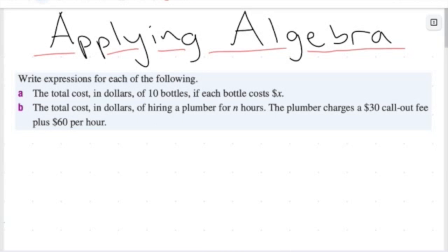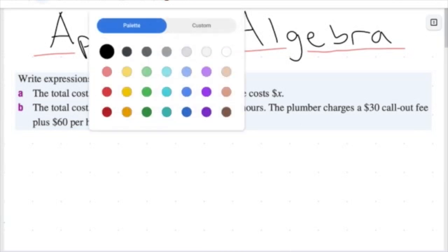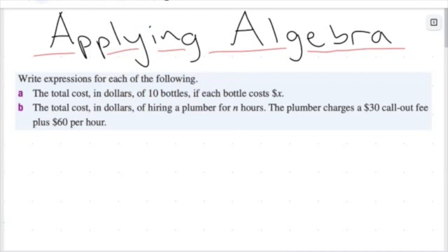I've got two questions here just pulled straight out of a textbook. These questions require us to write expressions for each of the following. Part A, we want to write an expression for the total cost in dollars of 10 bottles if each bottle costs x dollars. So I'm going to highlight the key bits of information. I've been given 10 bottles and each bottle costs x dollars.